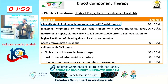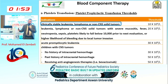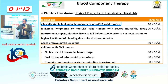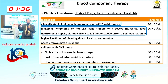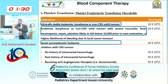For platelet transfusion guidelines in cancer: if the patient has a non-CNS tumor — either solid tumor or leukemia — and is clinically stable with no fever, the cutoff point for platelets is 10,000. If the patient has fever or is unstable, the cutoff point is 20,000. For Nora, since she has fever, our cutoff is 20,000. She came with platelets of 10,000, so we will transfuse platelets as well as blood.